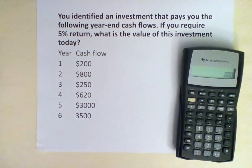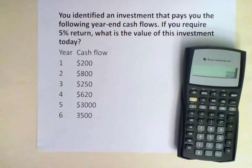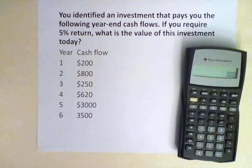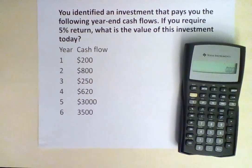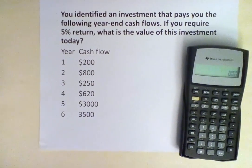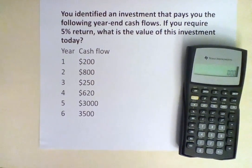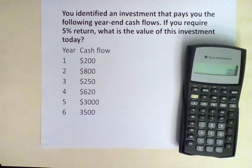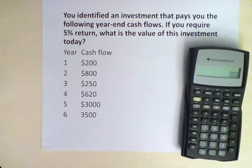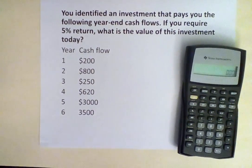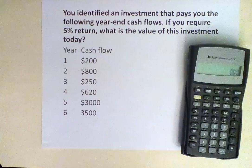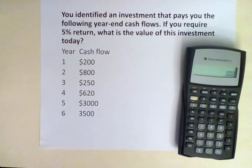At the end of year 1, you receive $200. At the end of year 2, you receive $800. At the end of year 3, you receive $250. At the end of year 4, you receive $620. At the end of year 5, you receive $3,000. And at the end of year 6, you receive $3,500.